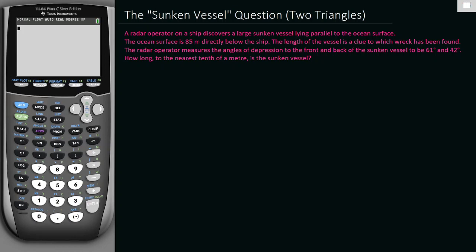A radar operator on a ship discovers a large sunken vessel lying parallel to the ocean surface, lying flat on the ocean bottom. The ocean surface is 85 meters directly below the ship. The length of the vessel is a clue to which wreck has been found. The radar operator measures the angles of depression to the front and back of the sunken vessel to be 61 and 42 degrees respectively. How long to the nearest tenth of a meter is the sunken vessel?